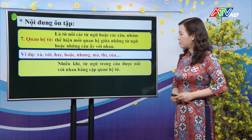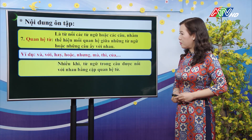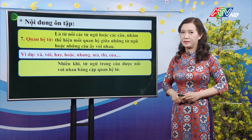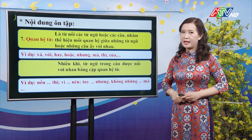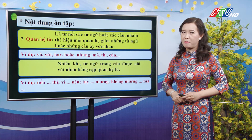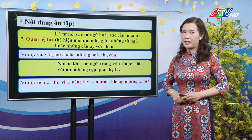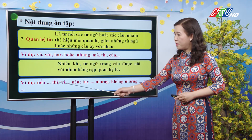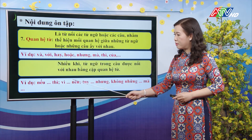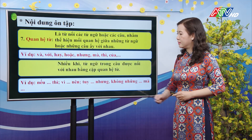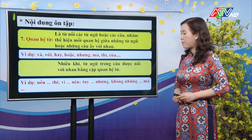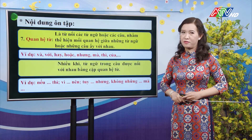Nhiều khi từ ngữ trong câu được nối với nhau bằng cặp quan hệ từ. Các cặp quan hệ từ thường gặp là: nếu-thì, vì-nên, tuy-nhưng, không những-mà, v.v.